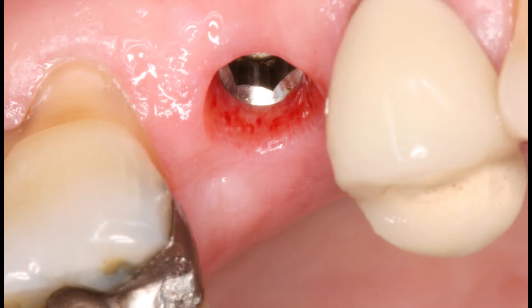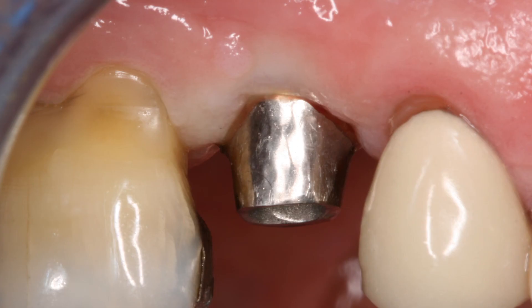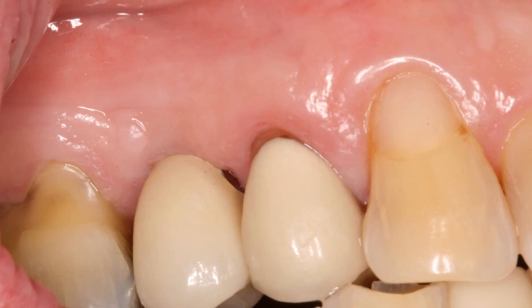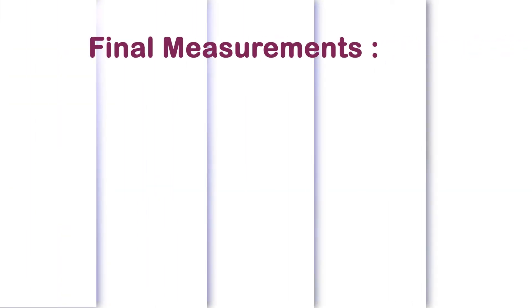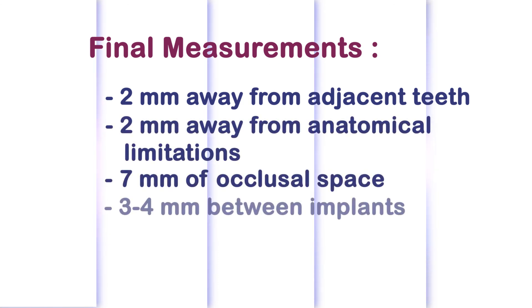When it was ready for restoration, our lab milled a nice custom abutment with ideal emergence, and the final restoration looks great. Now you have a simple recipe for your next implant case. Remember the three numbers: stay 2 millimeters away from your adjacent teeth, 2 millimeters away from anatomical limitations, give yourself 7 millimeters of occlusal space, and keep your implants 3 millimeters apart from one another. For more clinical tips, go to Enamel Pearls.